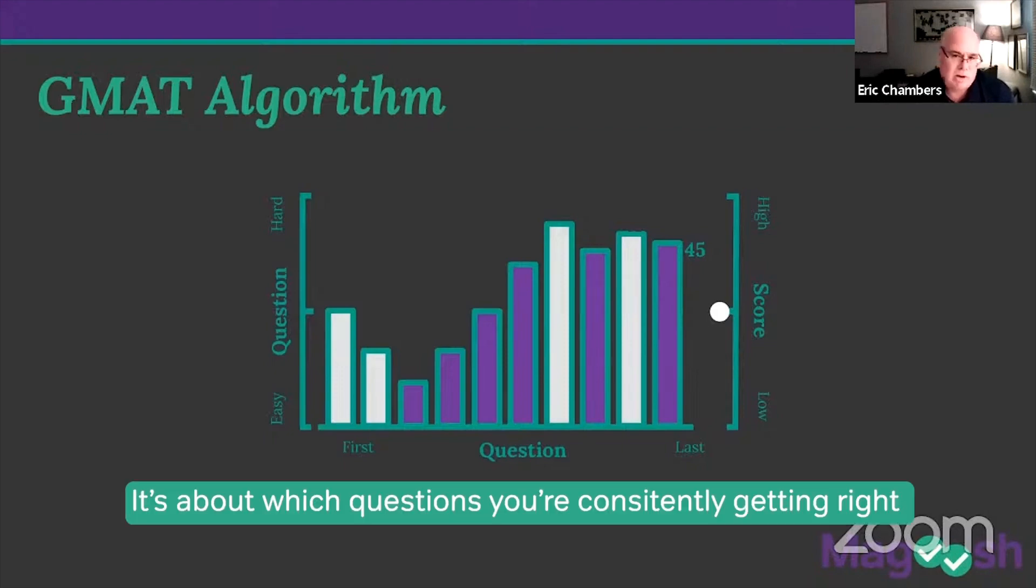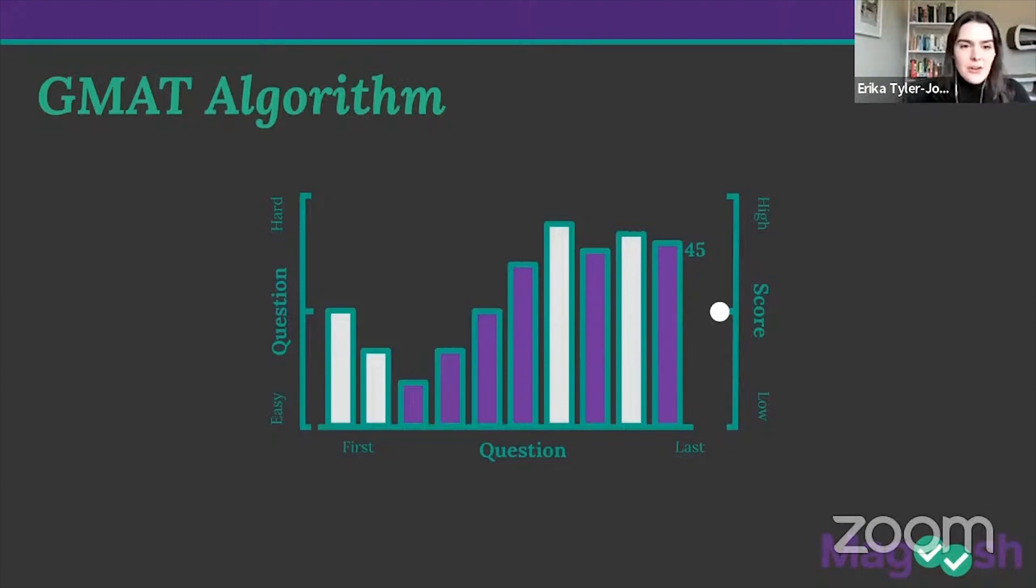So I have a question for you, Eric, just to kind of confirm that what I'm sharing with my students is accurate. Your score is a reflection of the difficulty where you're getting about half of them right and half of them wrong. So students should expect that if they're performing at their level, which is their score level on test day, they should expect to miss around 50% of questions. Would you say that's accurate? Absolutely.